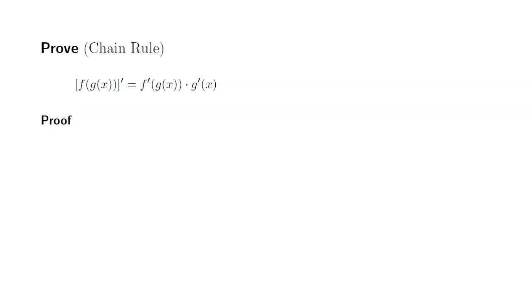All right, let's try to prove the chain rule. Here's the statement. The derivative of f of g of x is equal to f prime of g of x times g prime of x.